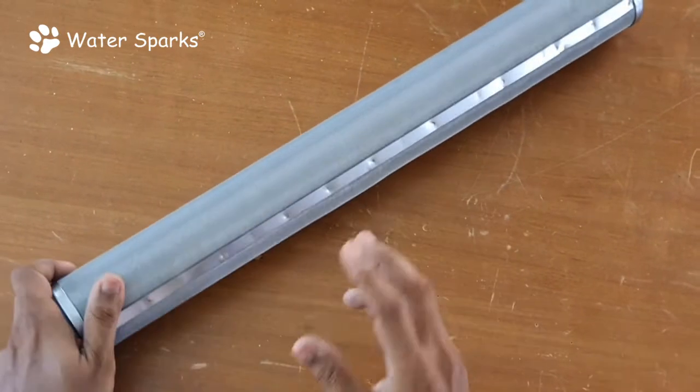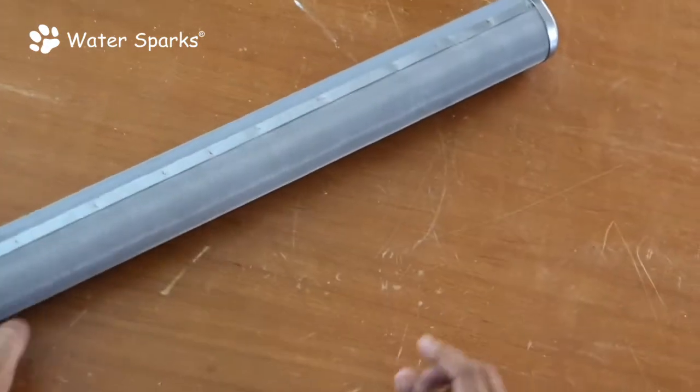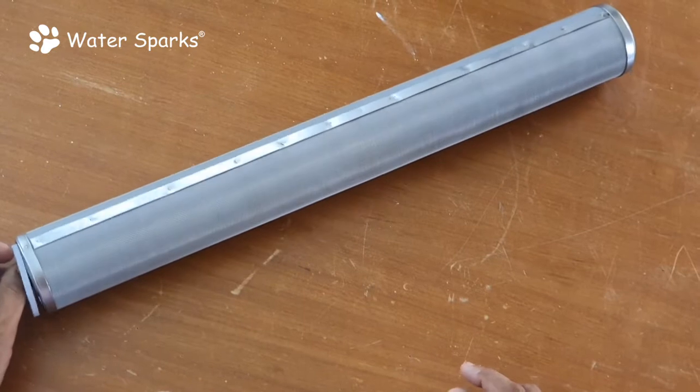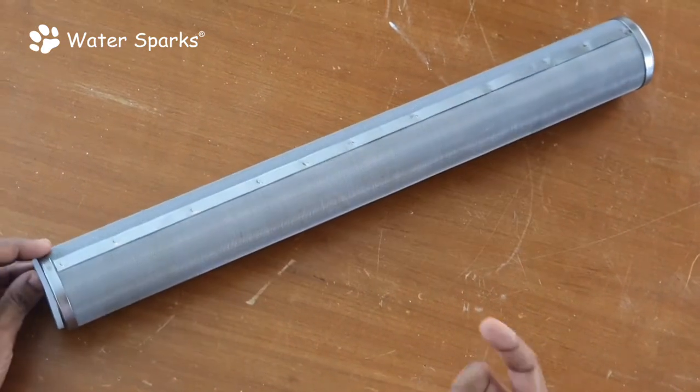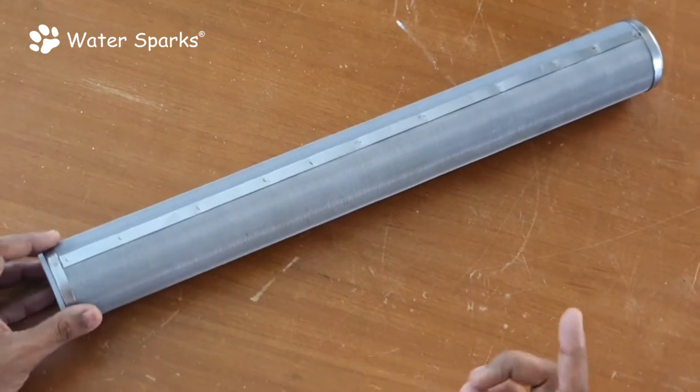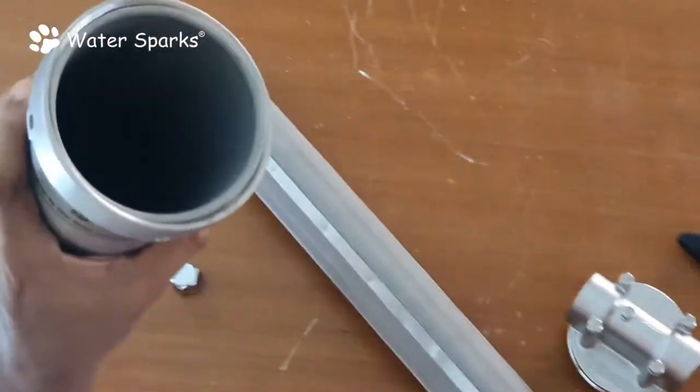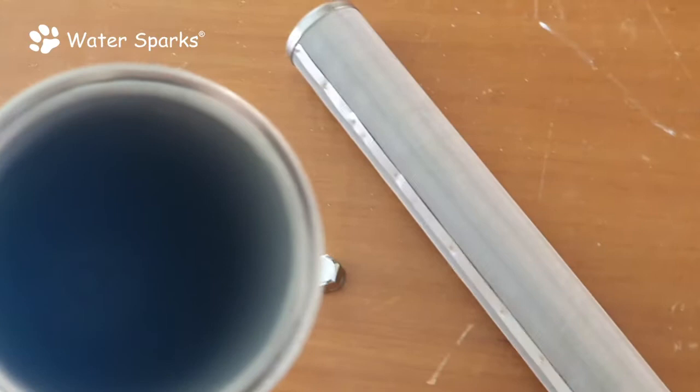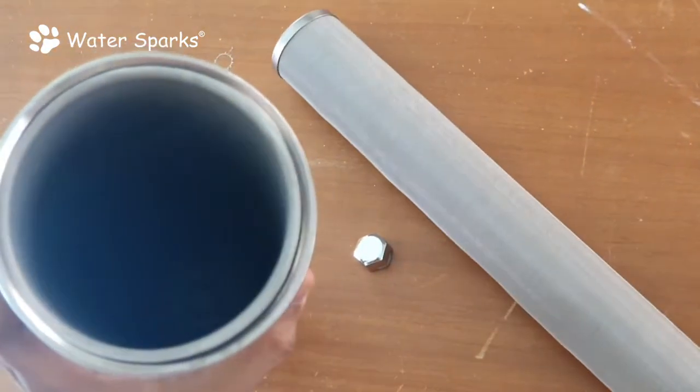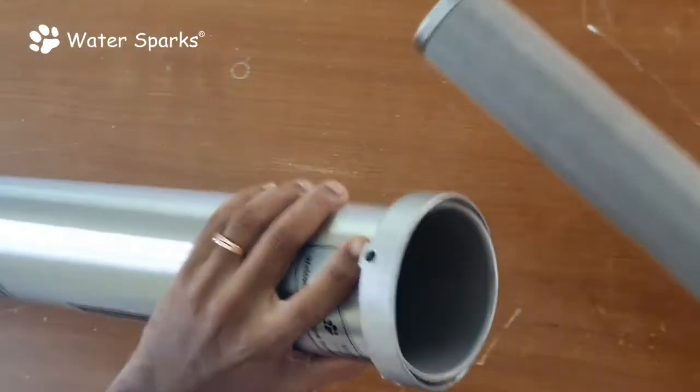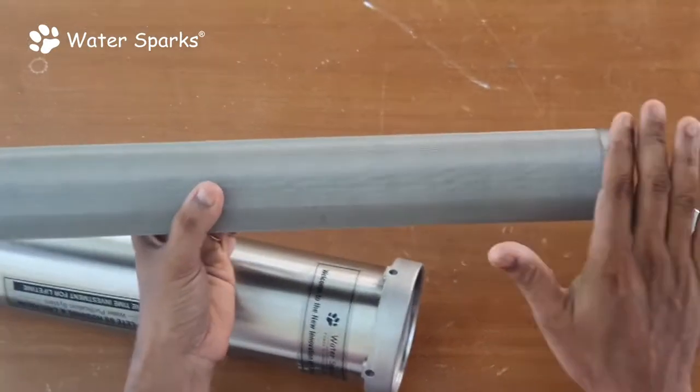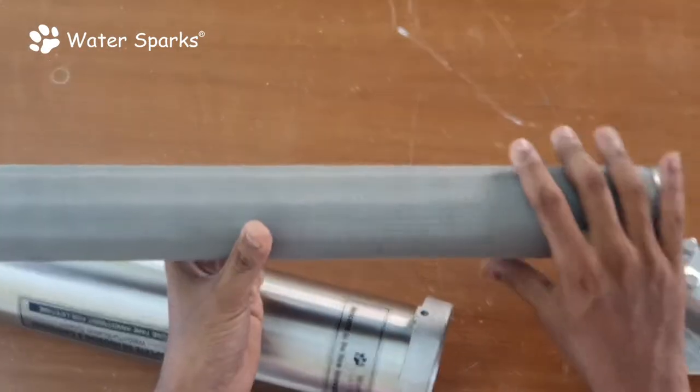This unit can be connected to your 1 HP, 1.5 HP, or maximum 2 HP motor from your sump to your overhead tank. The inside part shows how the dirt particles accumulated on the surface of the filter get flushed out through the flush valve.